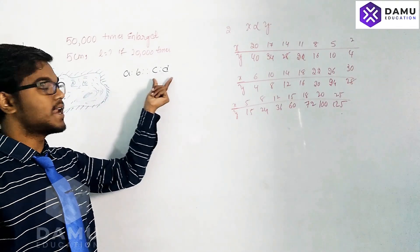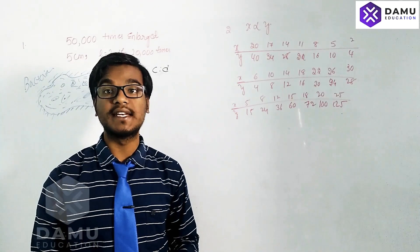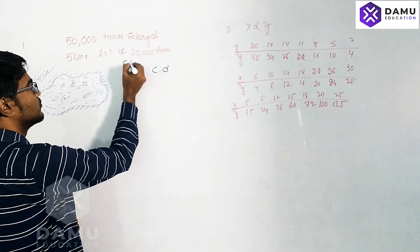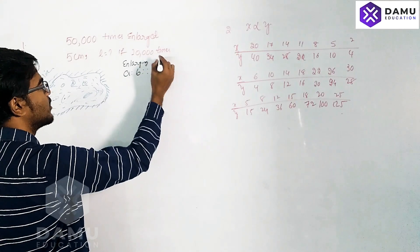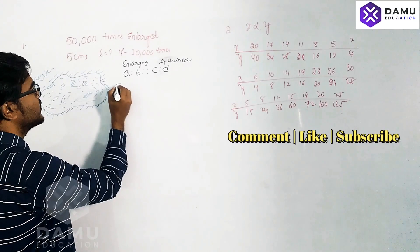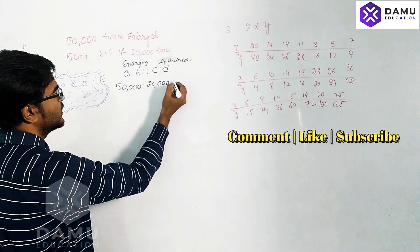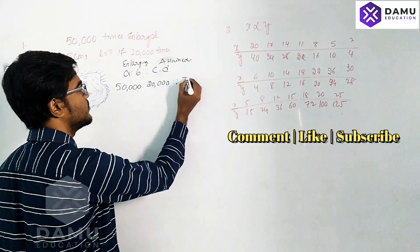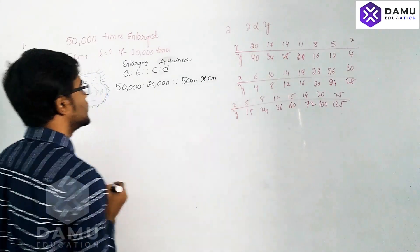On the left side we take how many times it's enlarged, and on the right side we take the attained length. So a will be 50,000, b will be 20,000. For enlarging 50,000 times, the attained length is five centimeters.